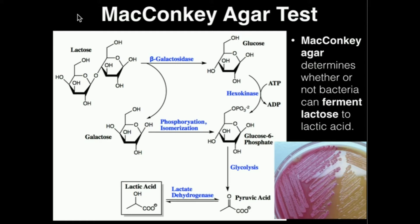MacConkey agar allows the growth of most gram-negative bacteria, so therefore we can actually select only gram-negative bacteria for growth because this prevents the growth of gram-positive bacteria. The main thing MacConkey agar is able to determine is whether or not lactose, which is a sugar disaccharide, can be fermented into acid end products such as lactic acid.